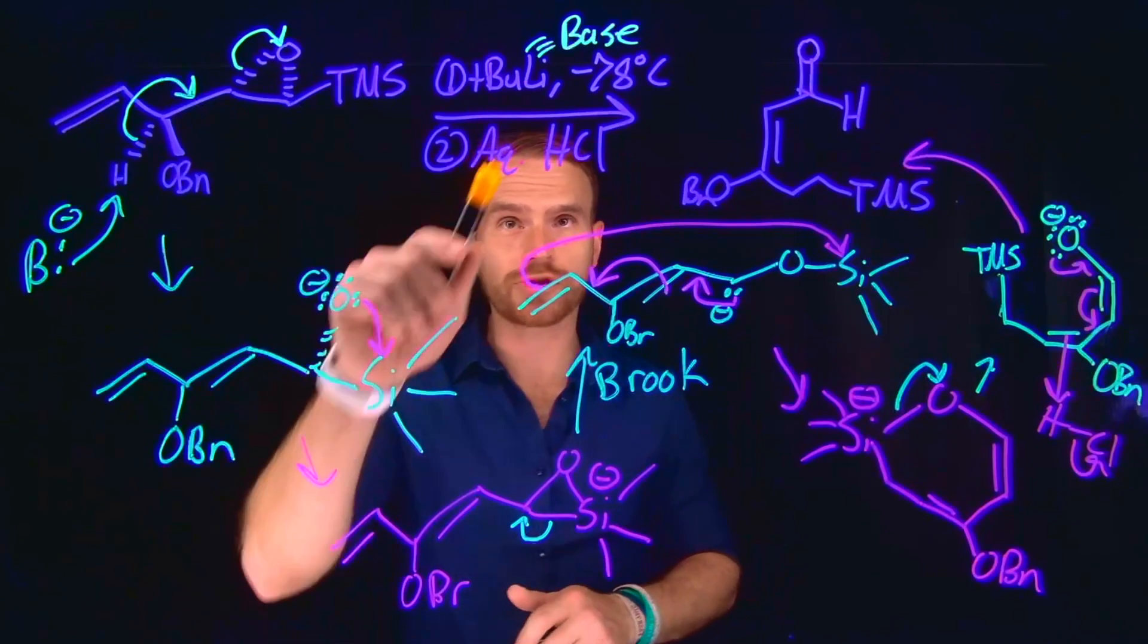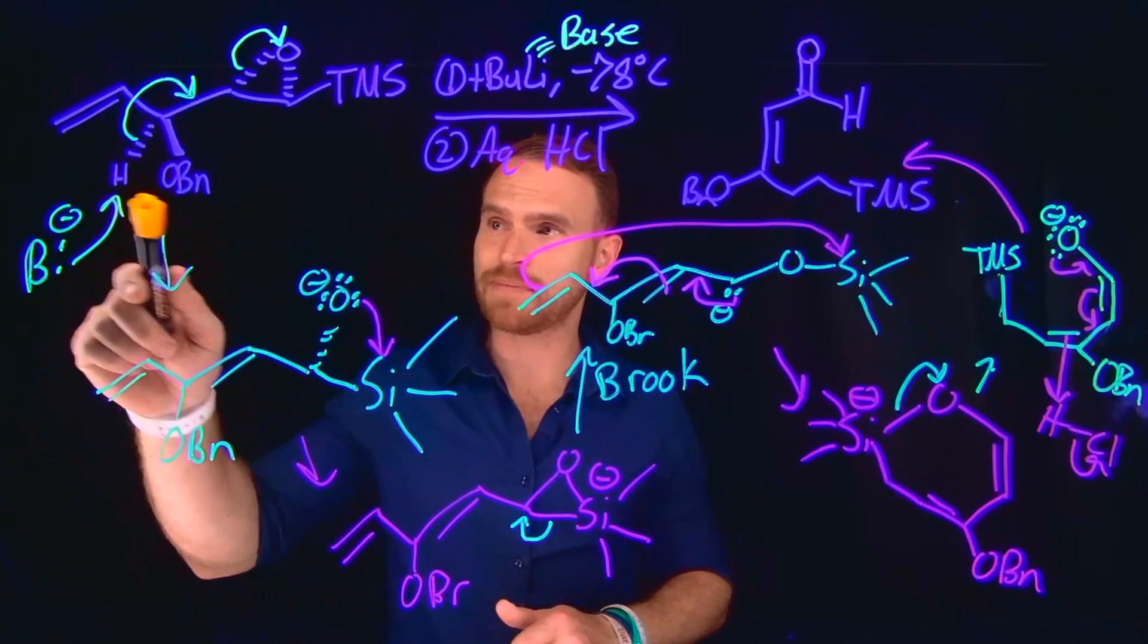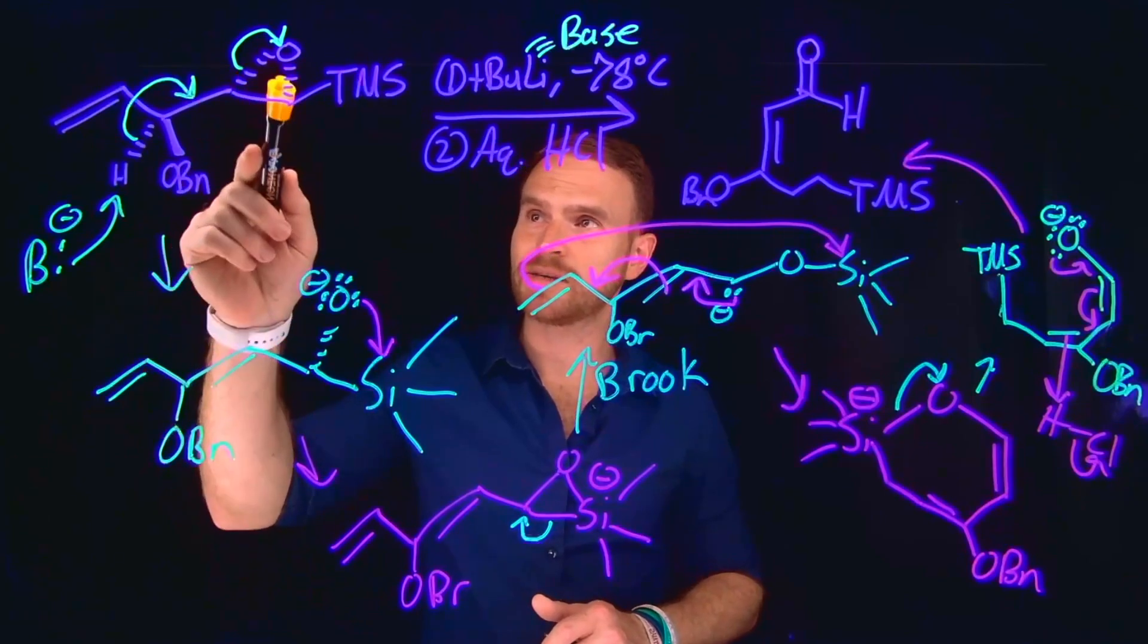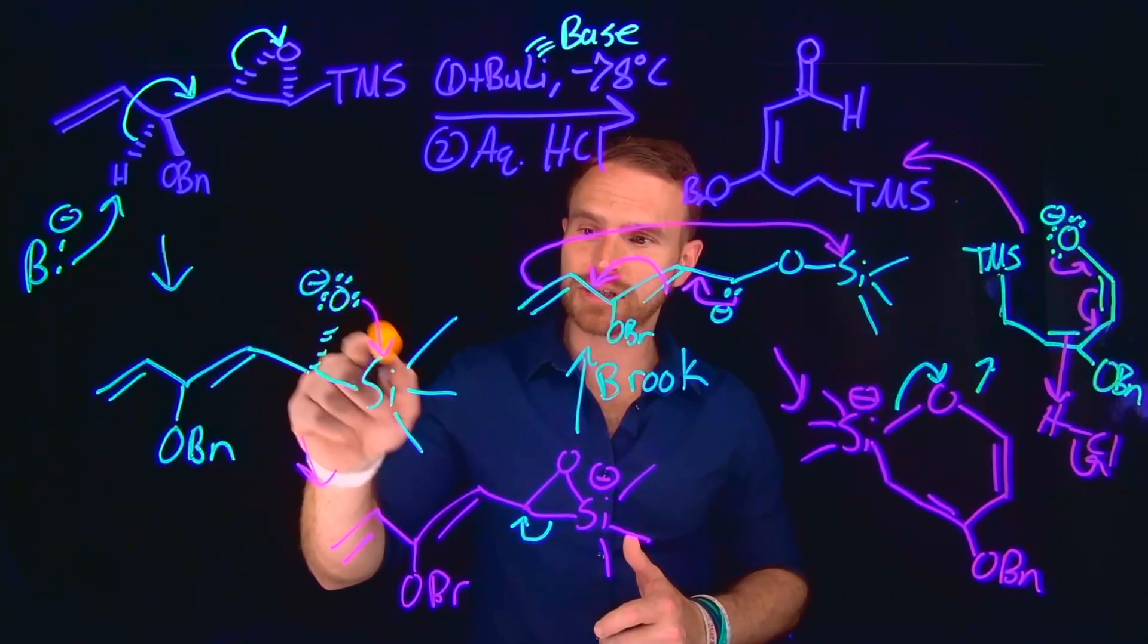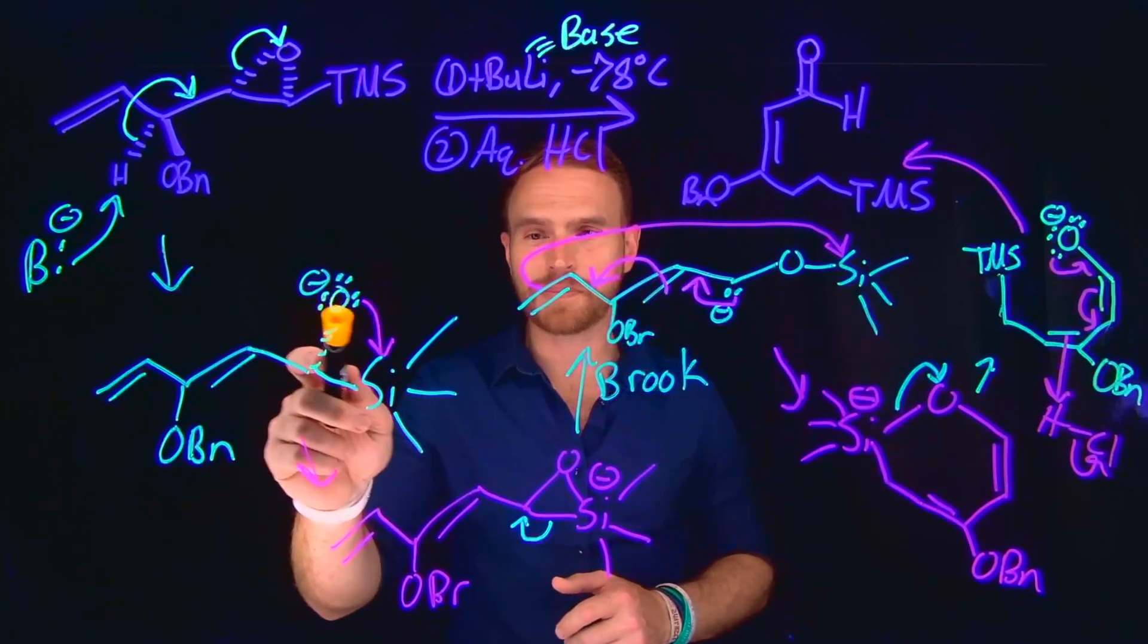So remember, the first step is our tert-butyl lithium acts as a base and deprotonates this hydrogen, which forms a conjugated pi system and opens up our epoxide ring. From here, we can have coordination of the oxygen to the silicon, because one is a Lewis base and one is a Lewis acid. And that is going to set up our Brook rearrangement.